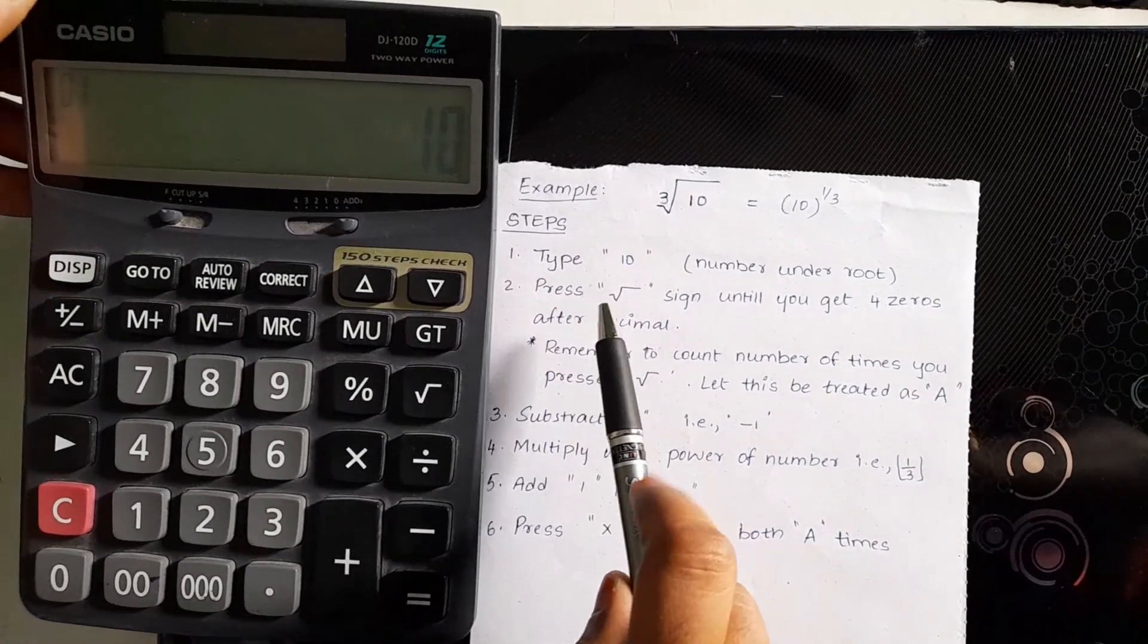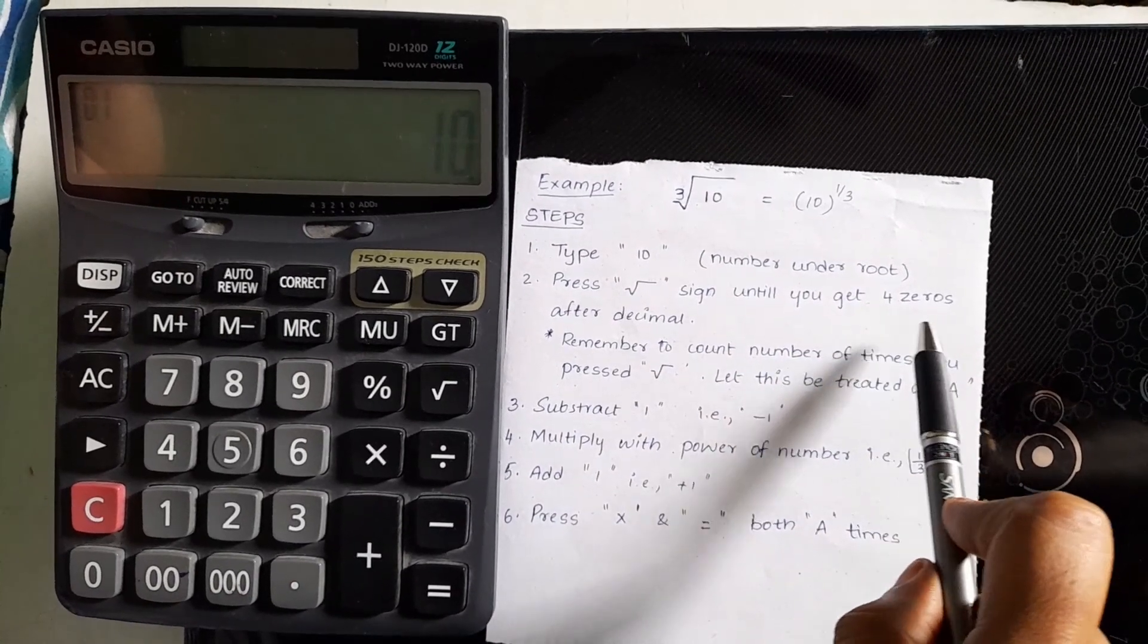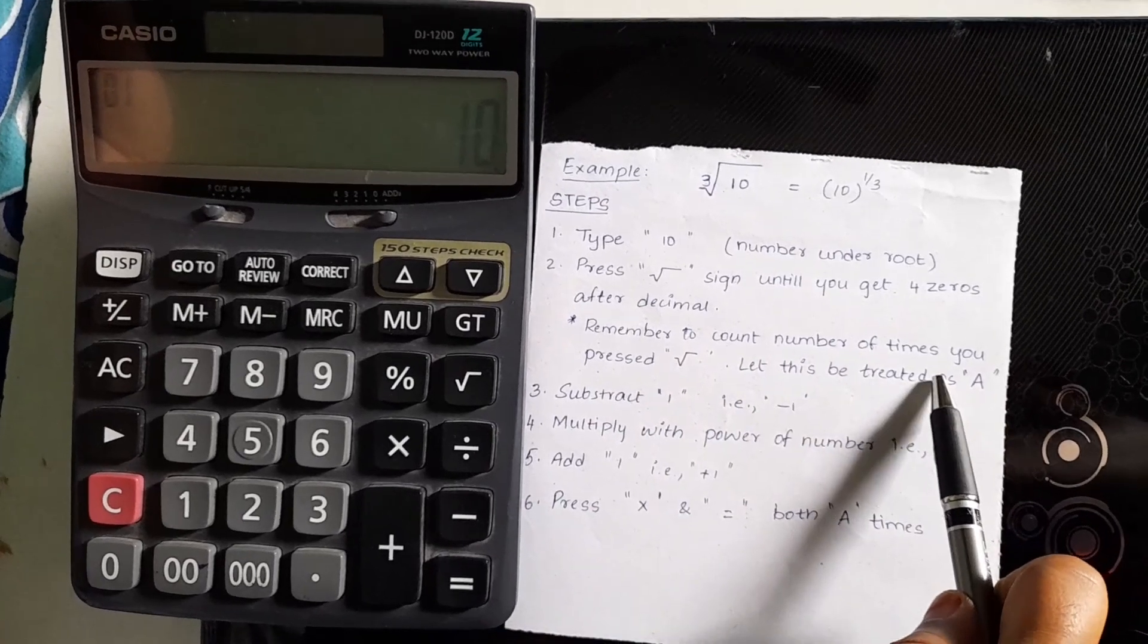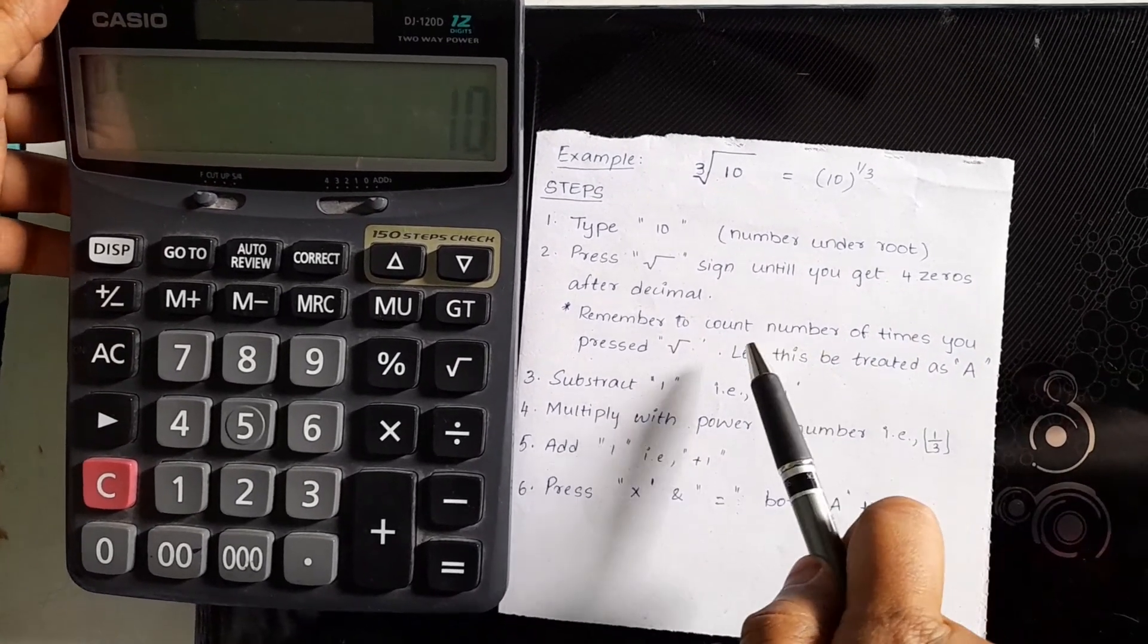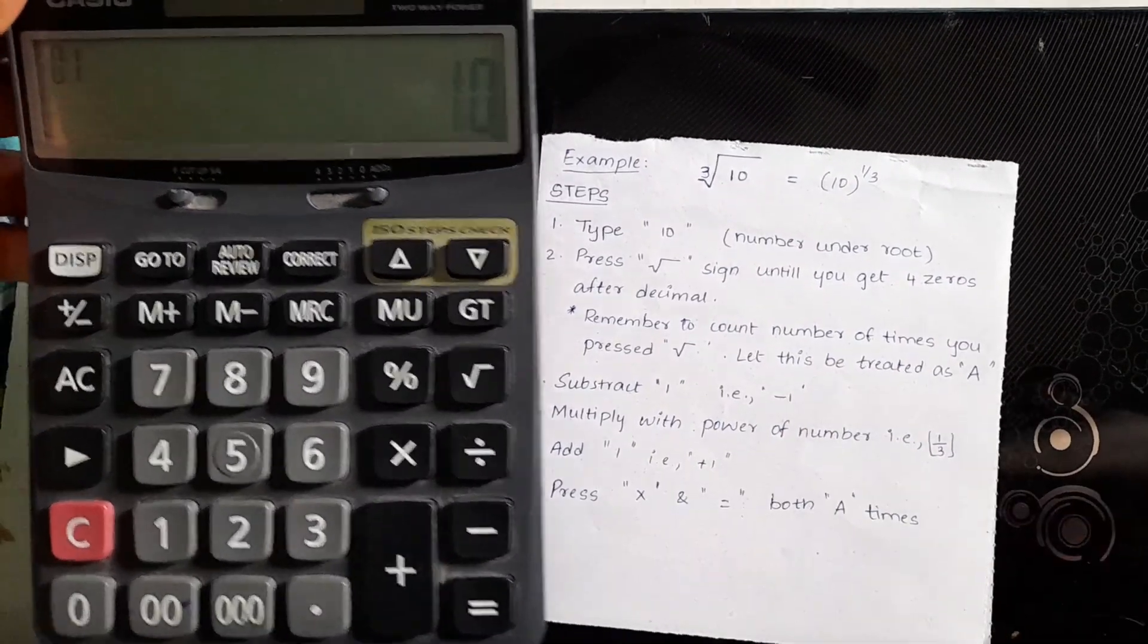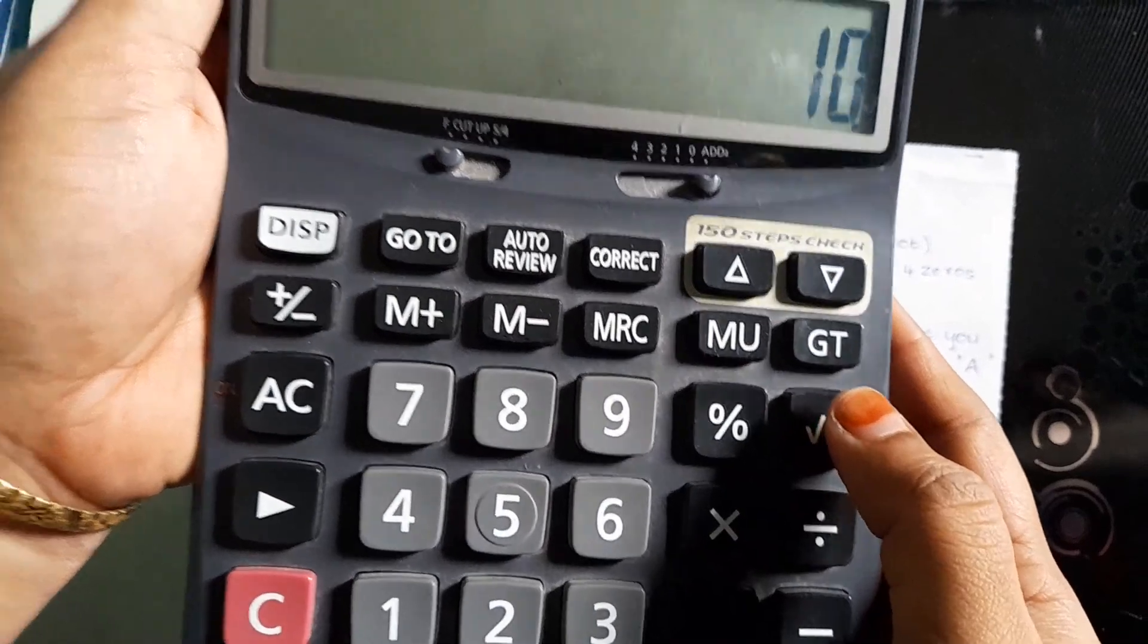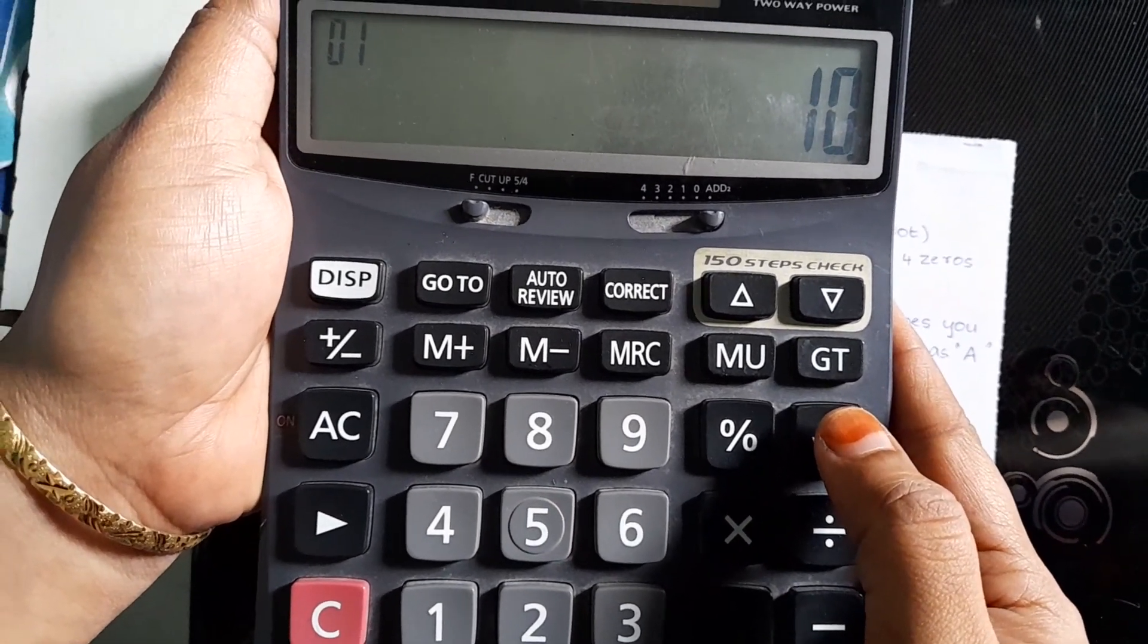And in the second step, press root sign until you get 4 zeros after decimal. Remember, to count the number of times you pressed root sign. Let this be treated as A. Come on, let's press this root sign. See, here is my root sign. And I am pressing it until I get 4 zeros after decimal.